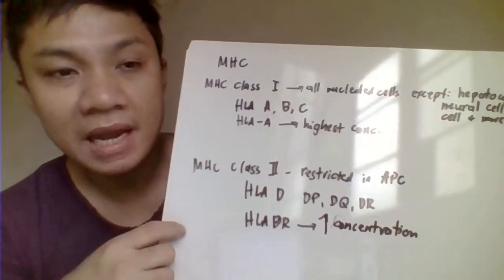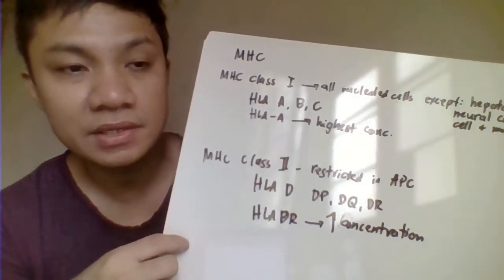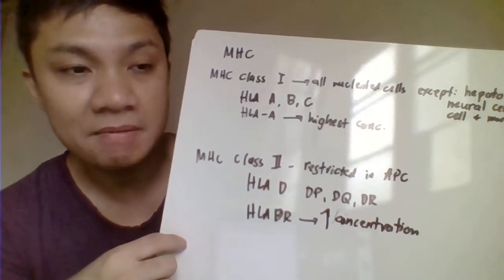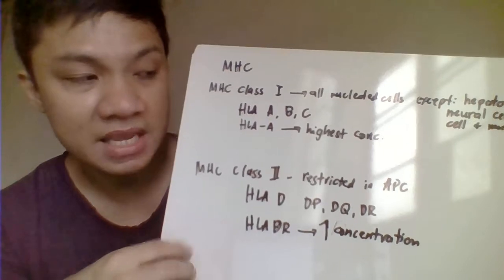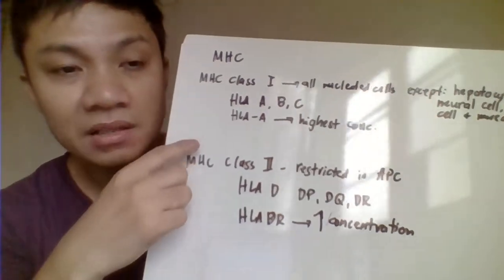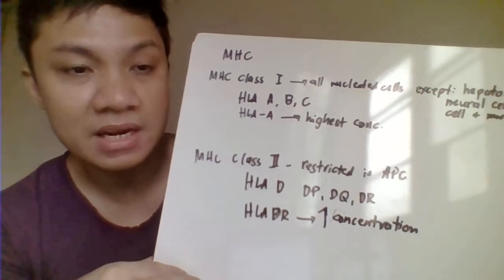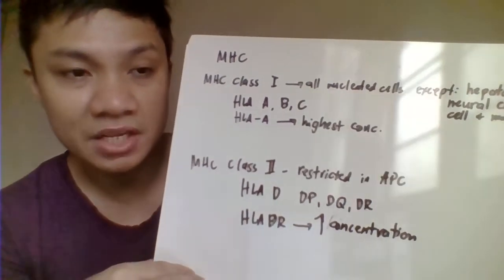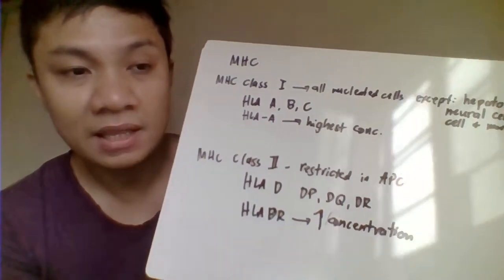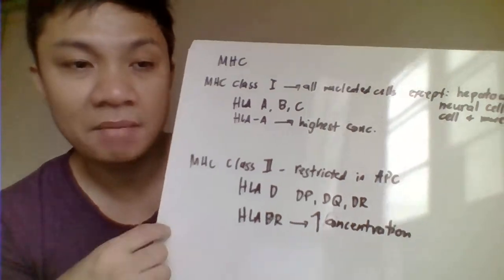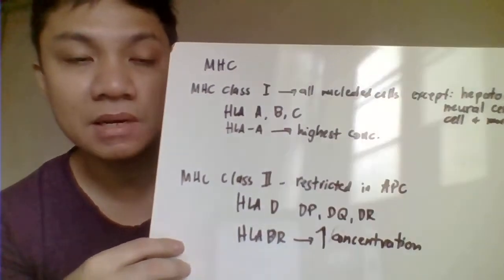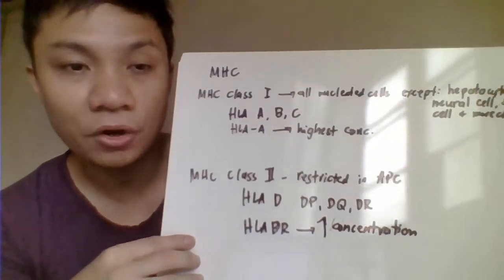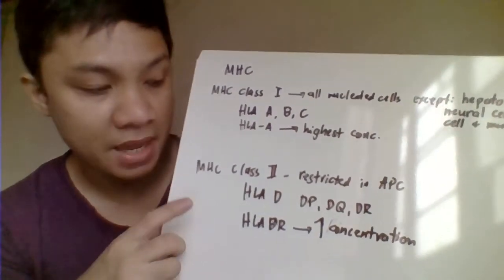MHC class 1 includes HLA-A, HLA-B, and HLA-C. Among these, HLA-A is found in the highest concentration, and therefore it becomes a major consideration for compatibility between the donor and the recipient.